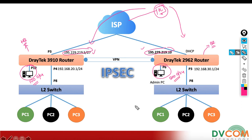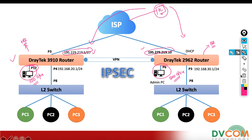My concern is that every day I need to change the cable. If I want to configure the Vigor 3910 router I need to remove my cable and connect on port number 12 to access it. If I want to access the 2962 I need to connect my cable on port number 6. I don't want to do it like that.